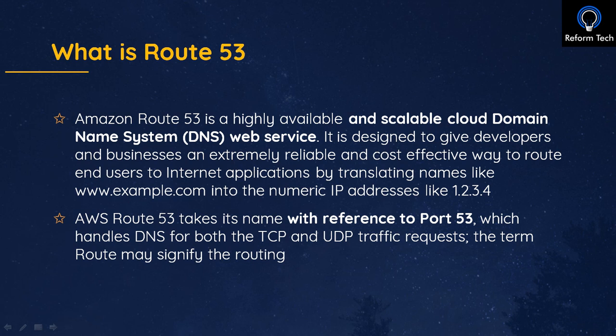But a machine cannot resolve a domain name — it needs an IP address. So DNS comes in to translate the domain name to the IP address so that browsers can load internet resources. AWS named it Route 53 because it references port 53, which handles DNS for both TCP and UDP requests. And 'route' itself indicates that it has routing policies — it routes the traffic.